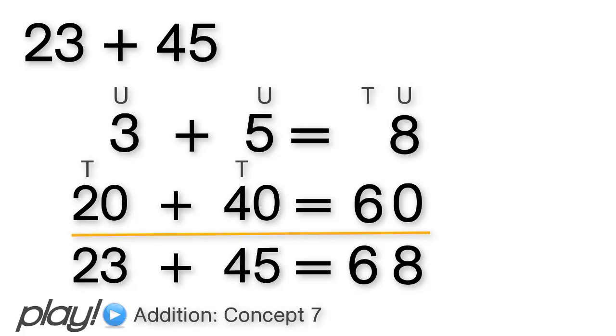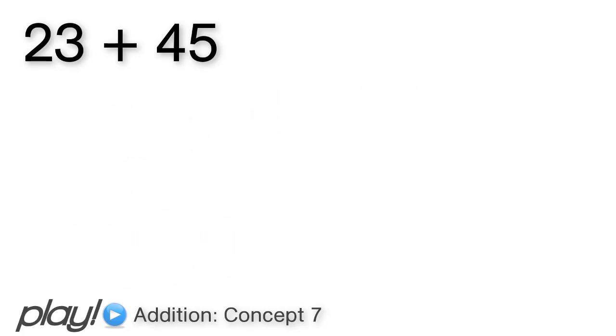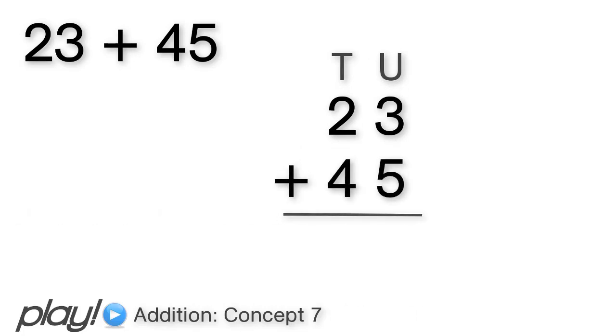Let's now do this using the short method in our place value columns. So we write 23 plus 45, the units on the right and the tens on the left. Again, we always start with our units first. 3 units plus 5 units gives us 8 units. It goes in the units column.